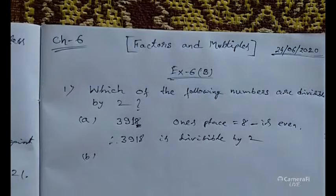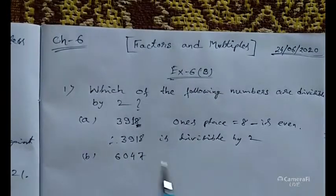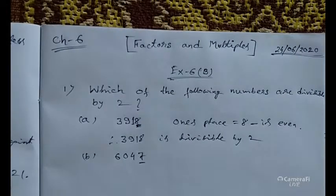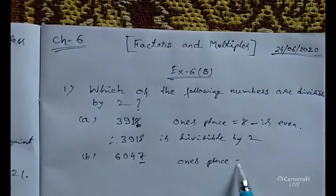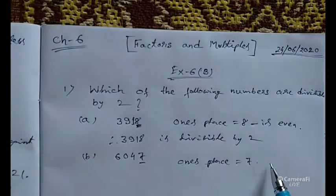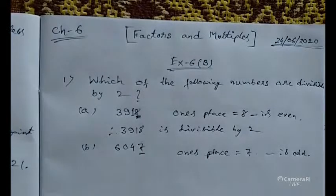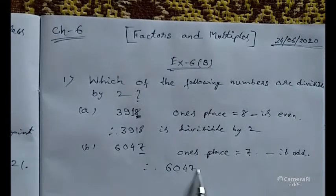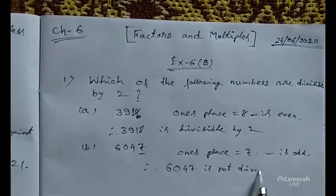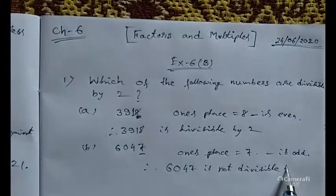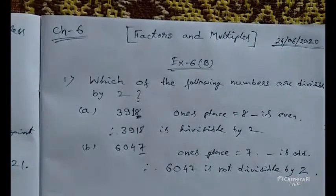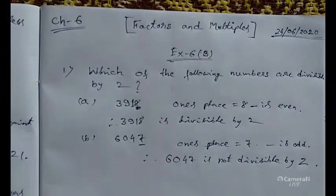Next is B number: 6047. Check the ones place digit — it is 7. So the ones place is 7, which is odd. This digit is odd, so the number is not divisible by 2. Therefore, 6047 is not divisible by 2.